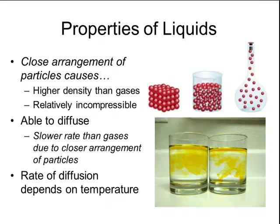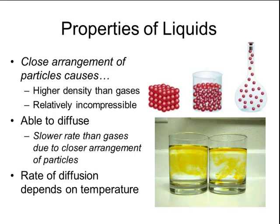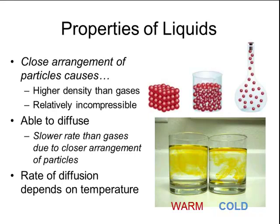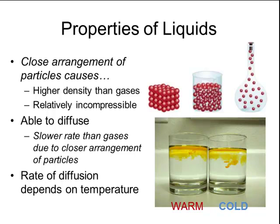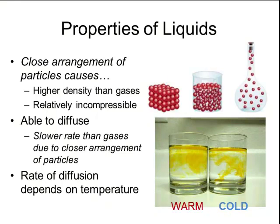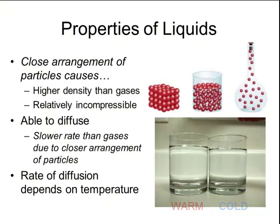In the picture to the right, there are two cups of water. The cup on the right has cold water in it, and the cup on the left has warm water in it. When you add a drop of food coloring to the liquid, you can see that the food coloring diffuses through the warm water much faster than it diffuses through the cold water. This is because the particles in the cold water are moving slower, and the particles in the warm water are moving faster.